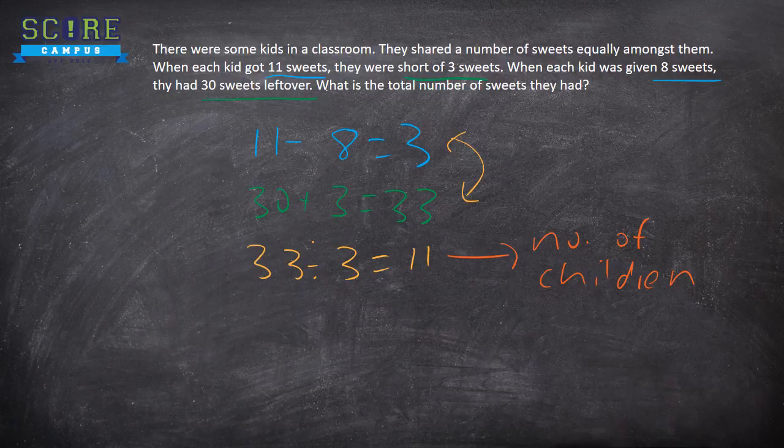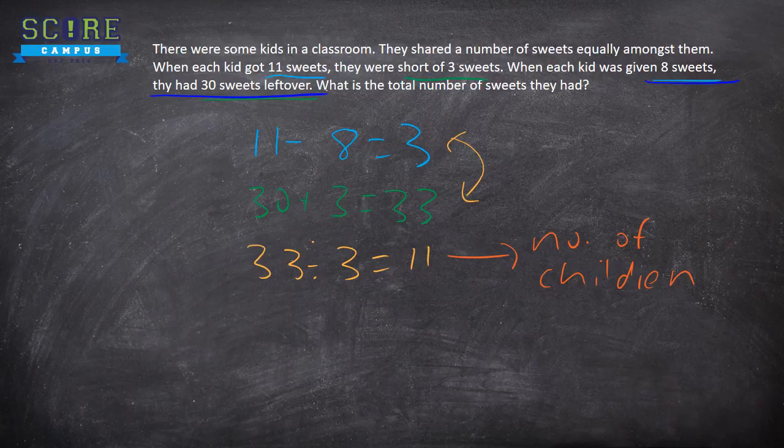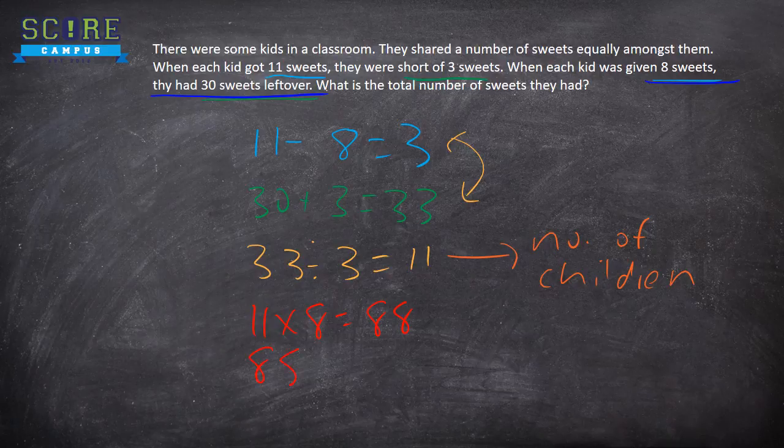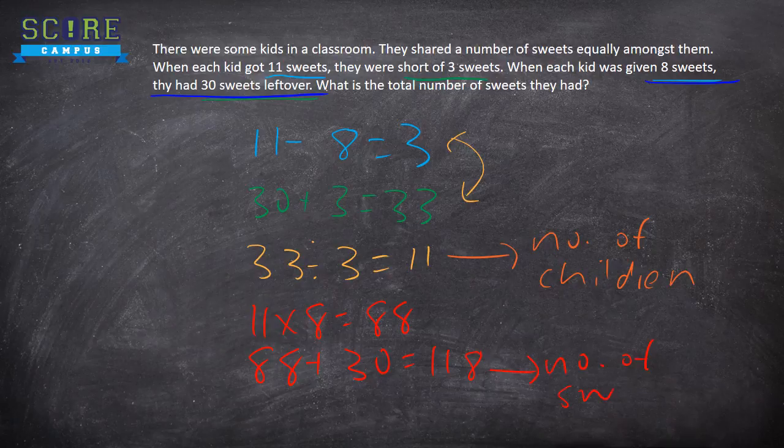And then the next step. Given that you have the number of kids, you can use any of the information. You can use when each kid was given 8, they have 30 left over. So, if you had 11 children, 11 times 8 equals to 88. 88 plus 30 equals to 118. This is number of sweets.